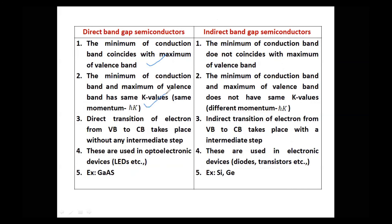In direct bandgap semiconductors, the K values are the same and hence the momenta are the same. In indirect bandgap semiconductors, the K values are different and hence the momentum values are different. Accordingly, the transition is direct in direct bandgap semiconductors and indirect in indirect bandgap semiconductors. The applications of direct bandgap semiconductors are in optoelectronic devices such as LEDs, with gallium arsenide as the prime example.